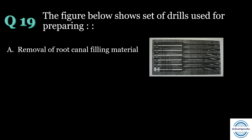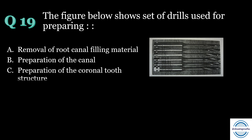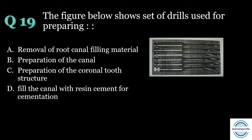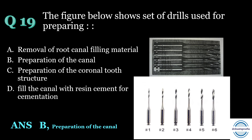Question number nineteen: The figure shows a set of drills used for — A) removal of root canal filling material, B) preparation of the canals, C) preparation of the coronal tooth structure, or D) fill the canal with resin cement for cementation? The answer is B. These are a set of piezo reamers, available in 6 sizes, used for preparing the canal while doing post and core. For option D, lentulo spirals are used to fill the canal with cement.